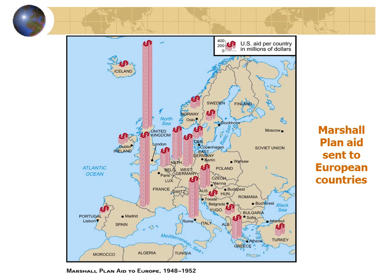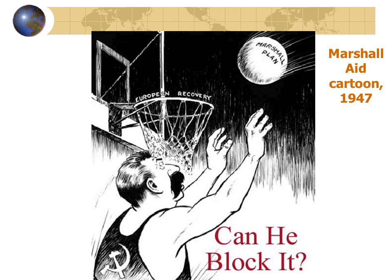A chart shows how the American Marshall Plan was distributed, with the majority of money going to England, France, and Italy, but also large amounts going to West Germany and Greece. A cartoon symbolizes the Marshall aid as a basketball going into a hoop labeled 'European Recovery,' with Joseph Stalin as the player trying to block it.